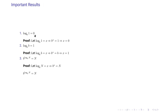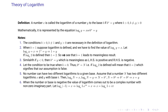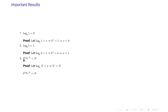Some important results: log of 1 with base b equals 0, because if log of 1 with base b equals x then b to the power x equals 1, so x equals 0. Also, log of b with base b equals 1, because b to the power x equals b implies x equals 1. And b to the power (log of n with base b) equals n, since if log of n with base b equals x then b to the power x equals n.